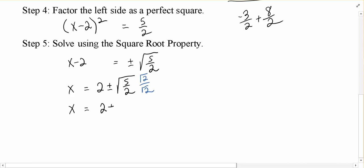So we've got 2 ± √10 on the top and 2 on the bottom. And in our homework system, we would write (2 + √10)/2 and (2 - √10)/2 as separate answers.